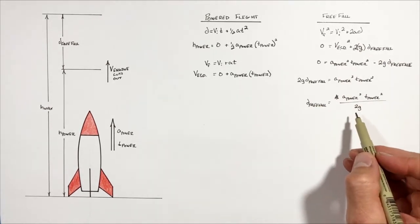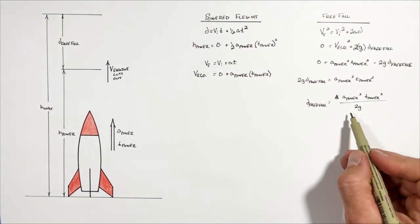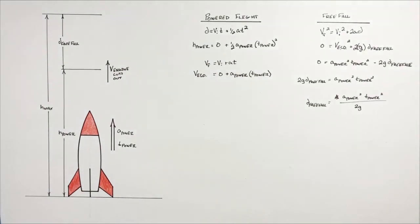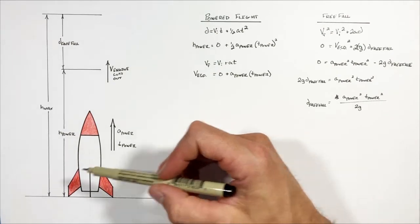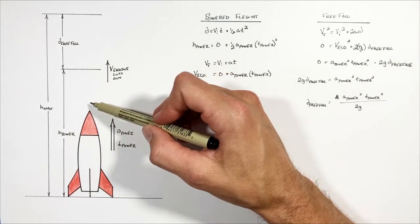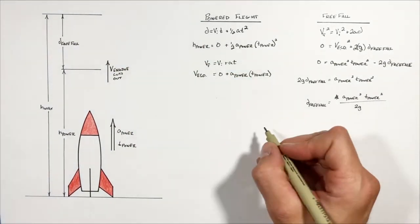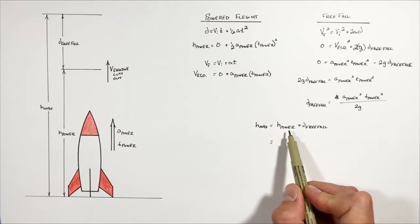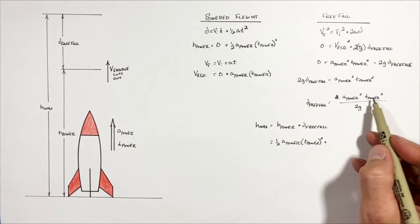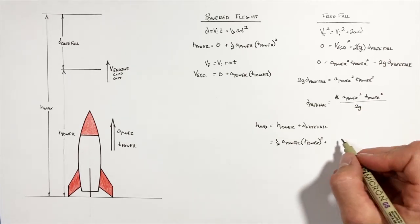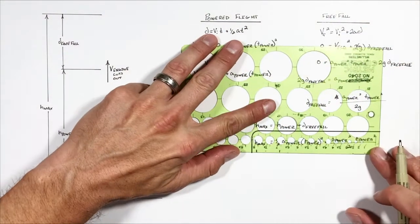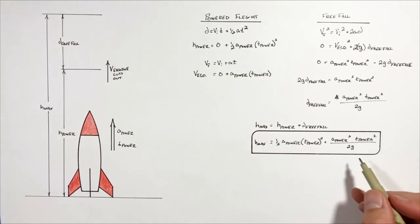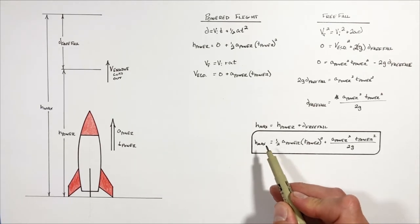Now we have an equation for the upward displacement of the rocket over the free fall phase. This is only the displacement from when the engine cuts out to the maximum height, not the full answer. To get the maximum height above the ground, we add together h_power — the displacement while under power — and the displacement during free fall. Substituting both equations gives us a final expression relating the rocket's upward acceleration, time under power, and gravity to the maximum height h_max.